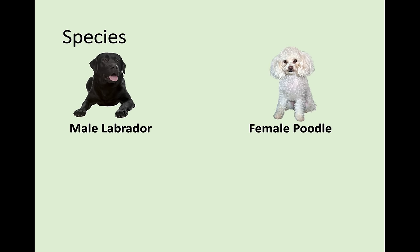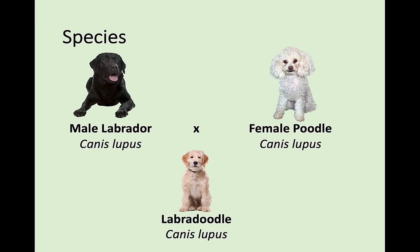One that people find tricky is if you have a male Labrador and a female Poodle. If they reproduce, you get a Labradoodle. Some people think that would be a different species, but that is not correct. All dogs are still one species, Canis lupus. The important thing to remember is that breeds are not species — they still produce dogs that can reproduce to produce other dogs.